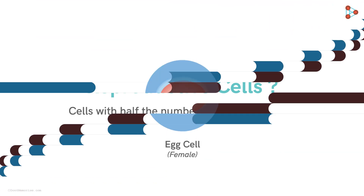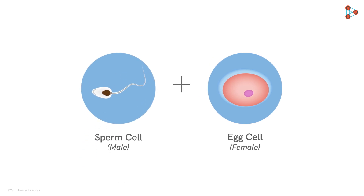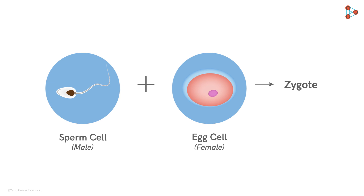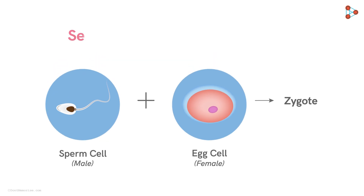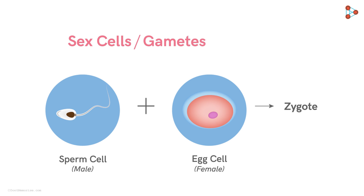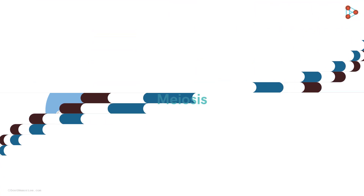The egg cell of the female and the sperm cell of the male are haploid cells which unite to form a zygote. These haploid cells together are called sex cells, gametes, or germ cells. Now let's understand how these gametes are produced with the help of meiosis.